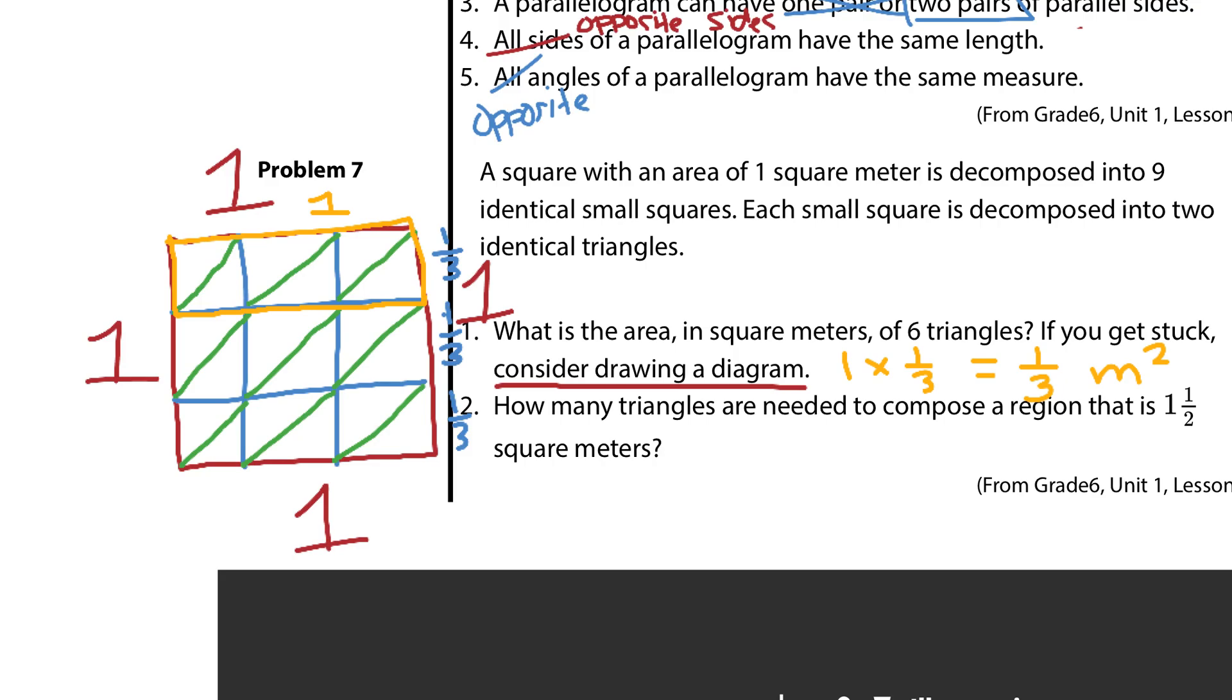Now, it's asking us how many triangles are needed to compose a region that's 1 and a half square meters. Well, the whole square was 1 square meter. And, that square itself was composed of 18 triangles. Well, 18 triangles, then, is equal to 1 square meter. Well, if 18 triangles is 1 square meter, and I'm trying to get at 1 and a half, how many triangles are in half a square meter? Well, how about 9? 9 triangles. If 18 is the whole, 9 would be the half. Well, now I have 1 and a half. And, so, if I just take 18 plus 9, I would end up with 27 triangles, being that 1 and a half square meters.